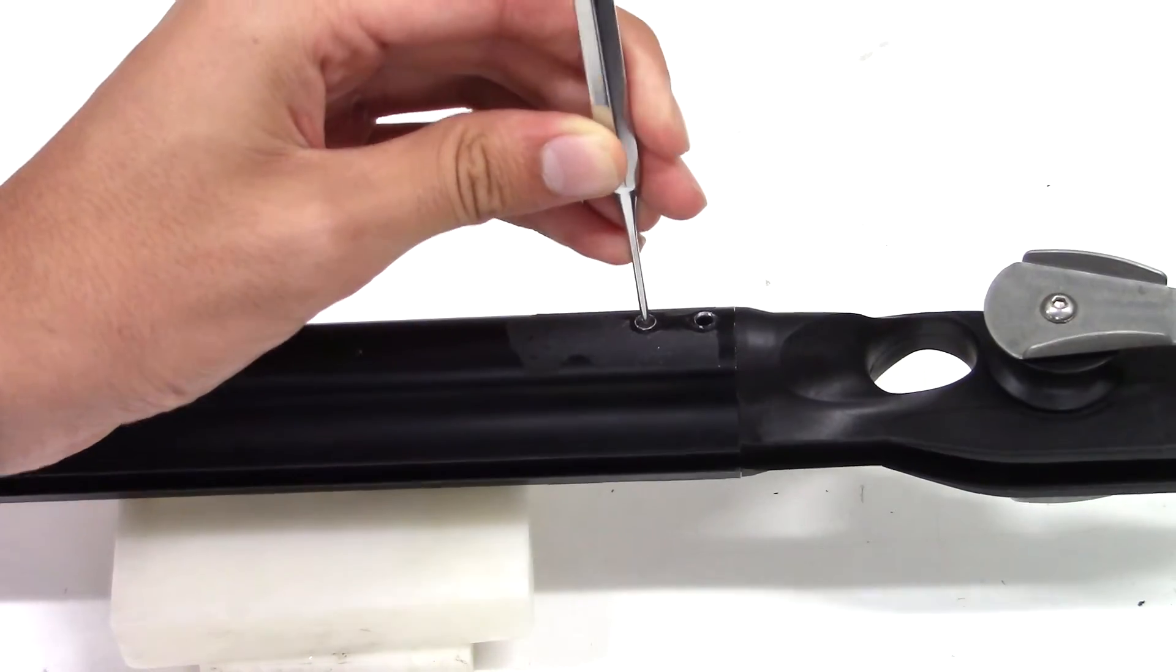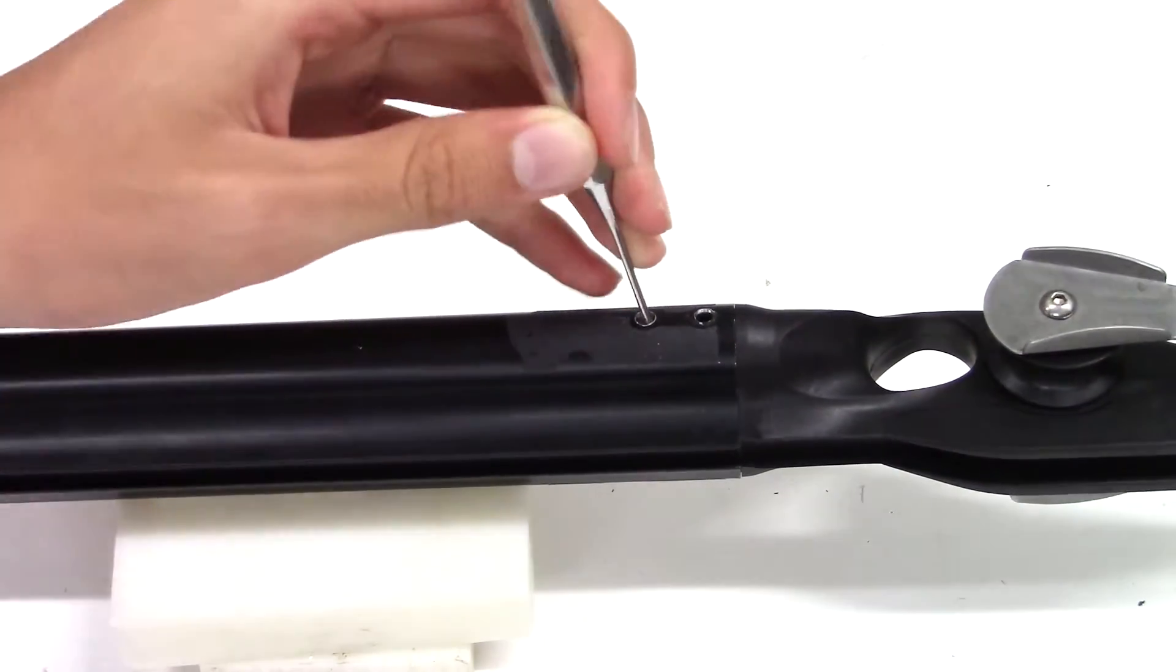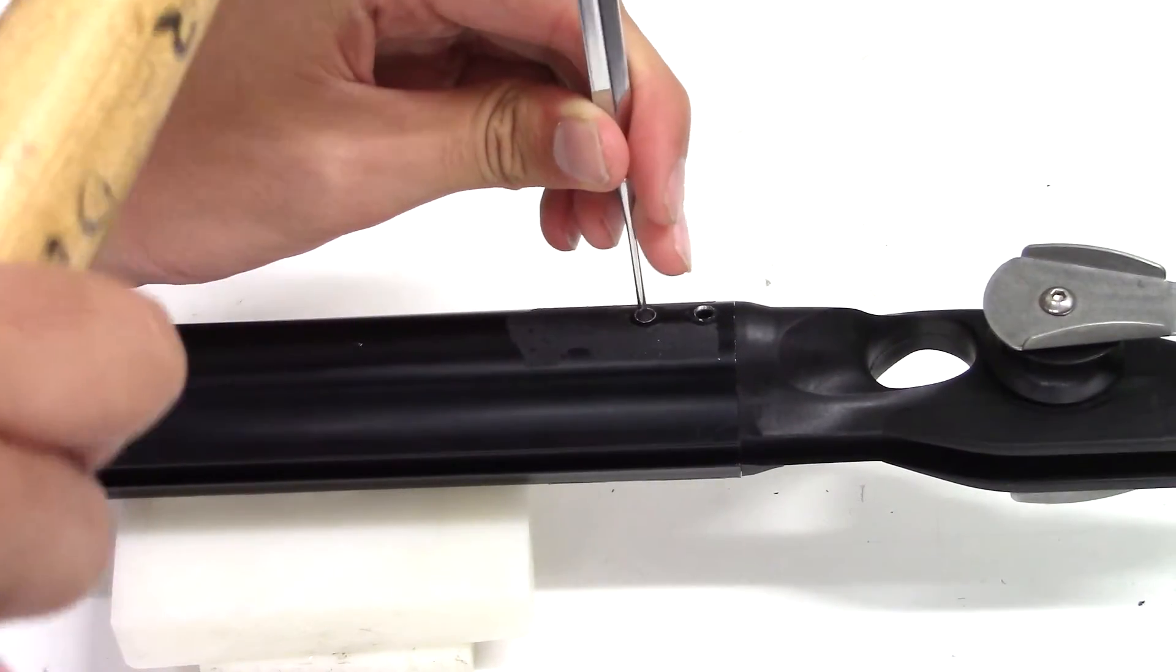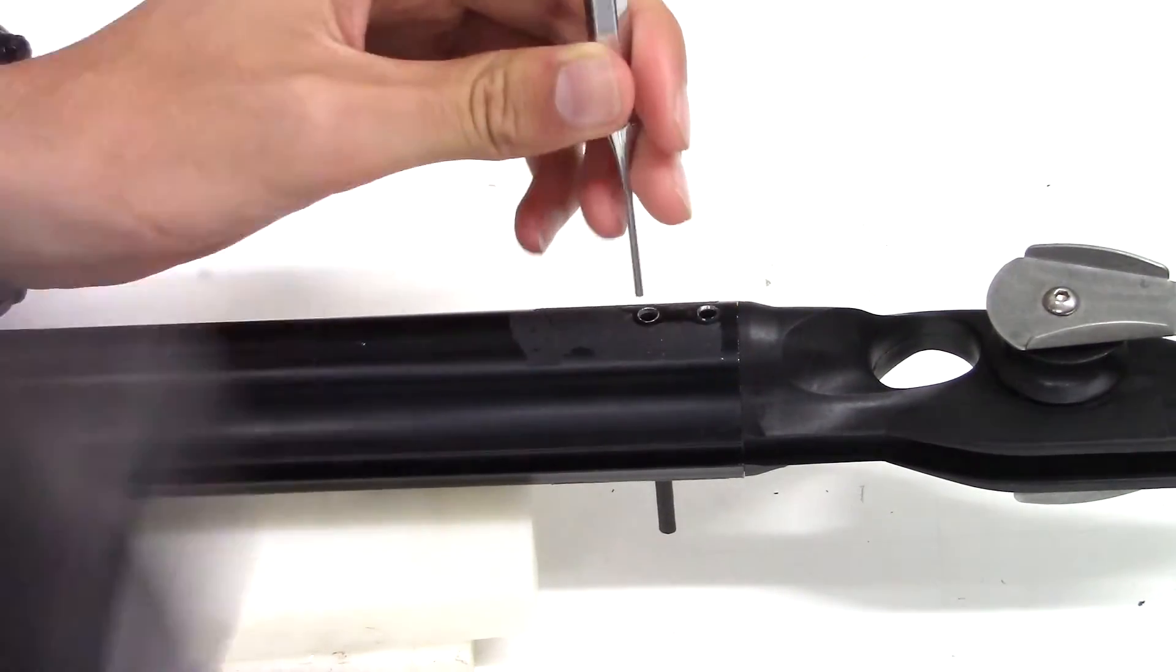The muzzle must then be pulled from the barrel. Care must be taken to pull straight on so that the barrel will not be damaged.